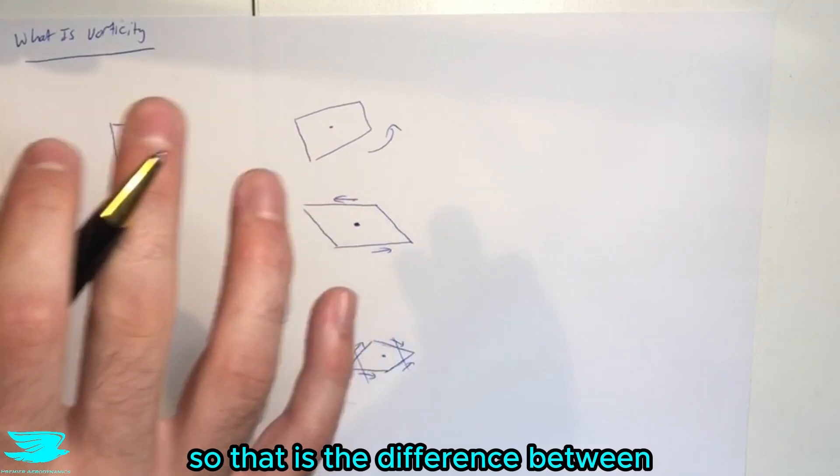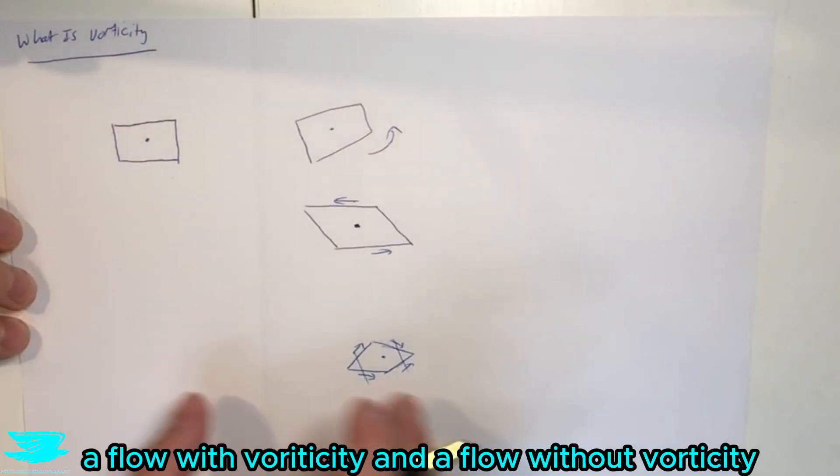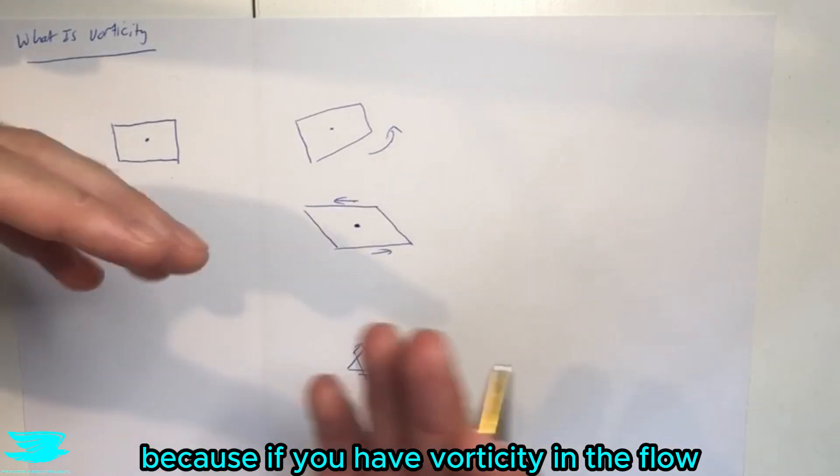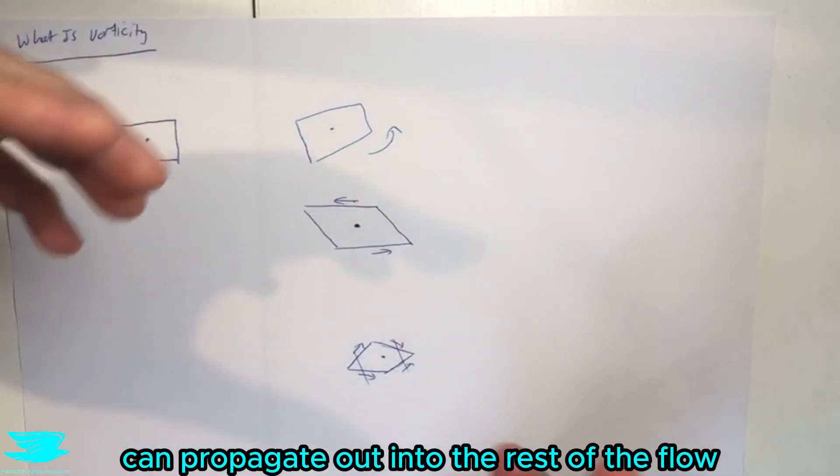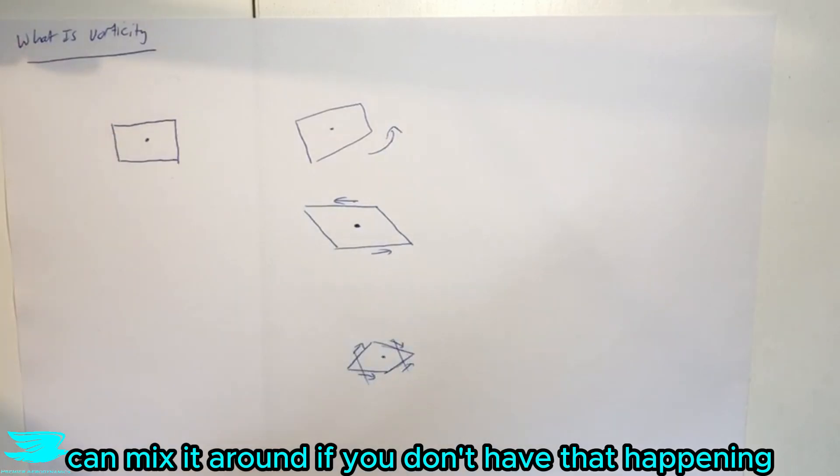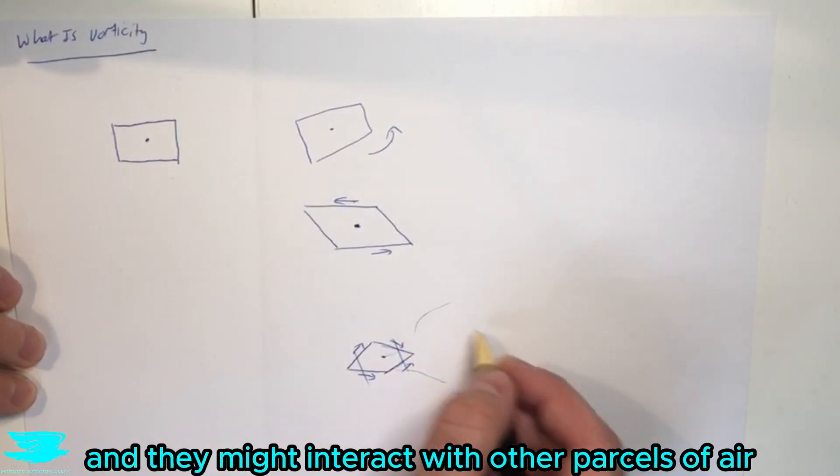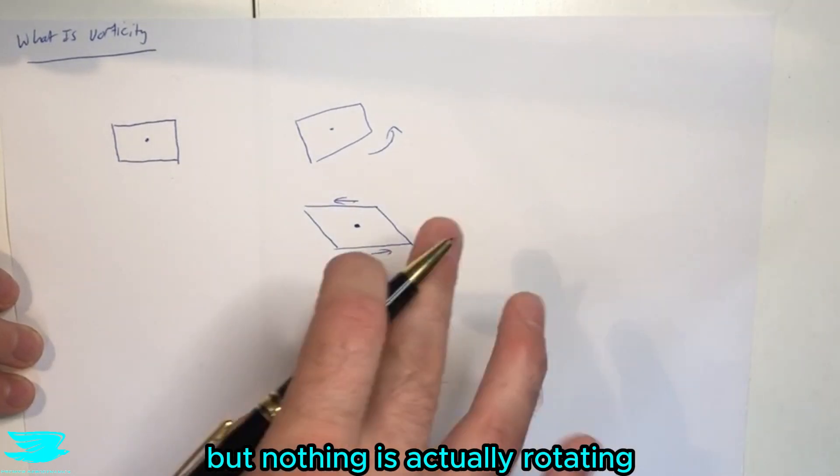So that is the difference between a flow with vorticity and a flow without vorticity, and this is important because if you have vorticity in the flow it means that can propagate out into the rest of the flow and change the rest of the flow, it can mix it around. If you don't have that happening, then this parcel of air is just moving around and it might interact with other parcels of air, but nothing is actually rotating.